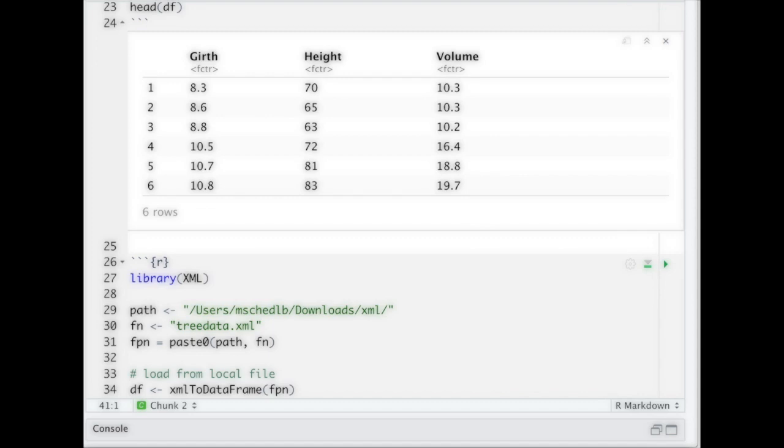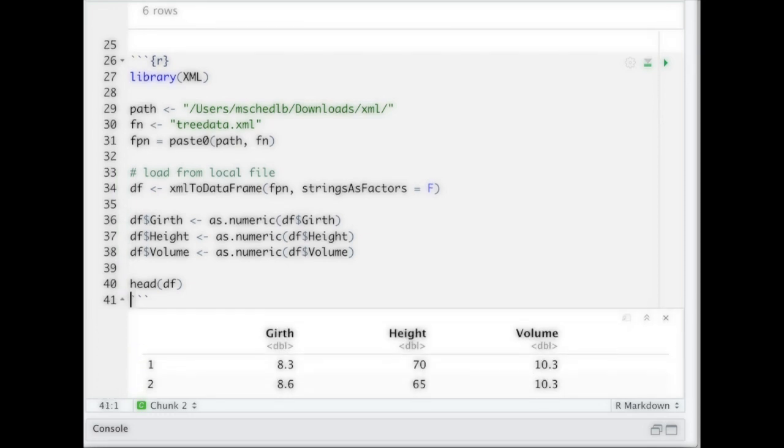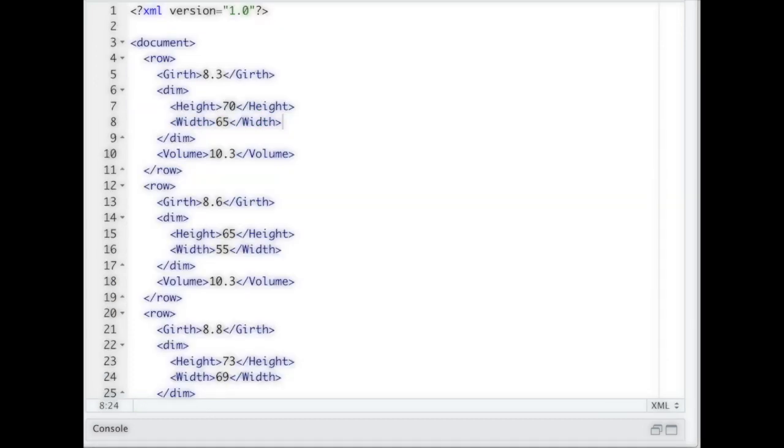So if I don't want to have them written as factors, I can of course make a conversion. I go ahead and first of all specify stringsAsFactors equals to false, I load the data as before, and then I convert each one of the columns individually, and now I have them as numeric when I can do computations on them.